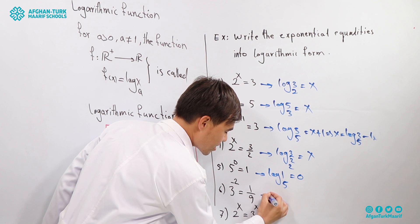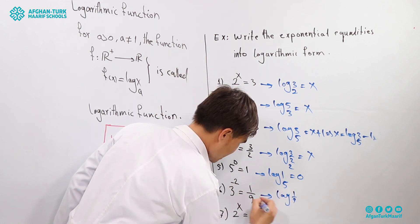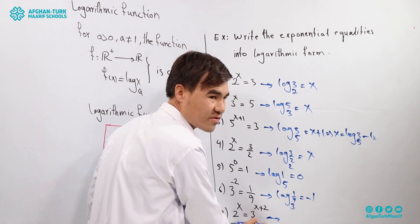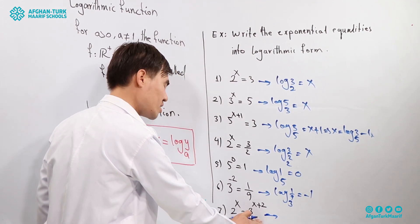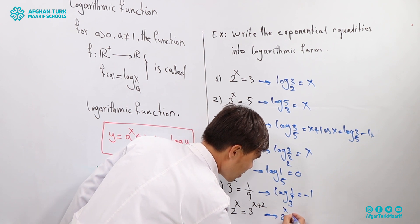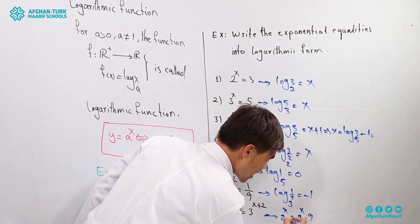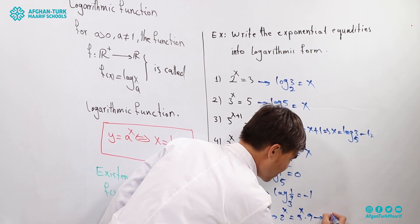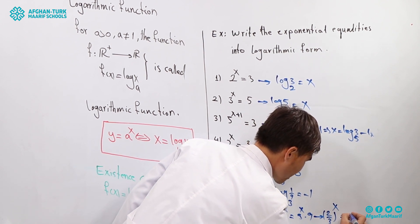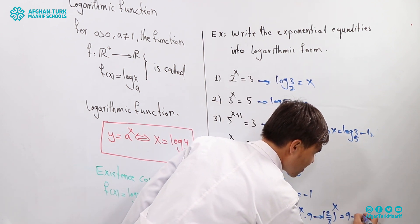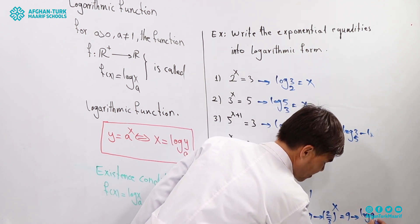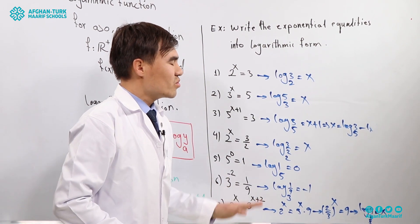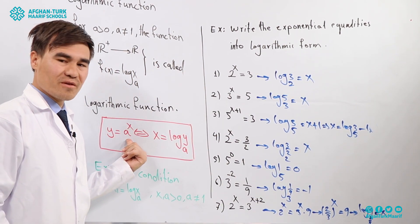We will talk about logarithmic properties further in the next videos. For example, log base 3 of (1/9) = -1. In equations where both sides contain the variable x — such as 2^x = 3^x times 9 — we divide both sides by 3^x to get (2/3)^x = 9, then convert to logarithmic form: log base (2/3) of 9 = x.